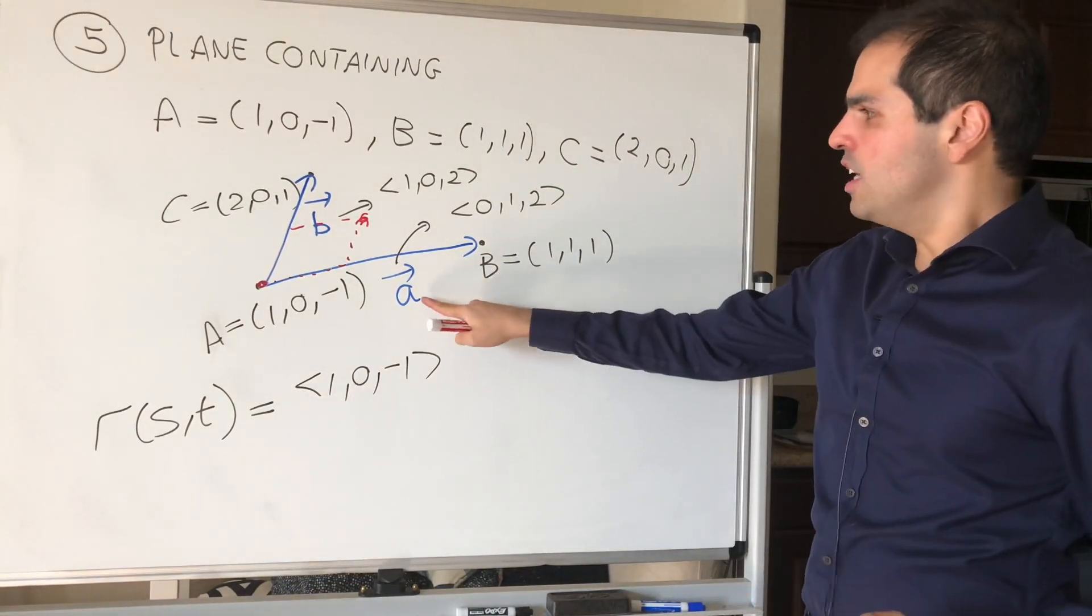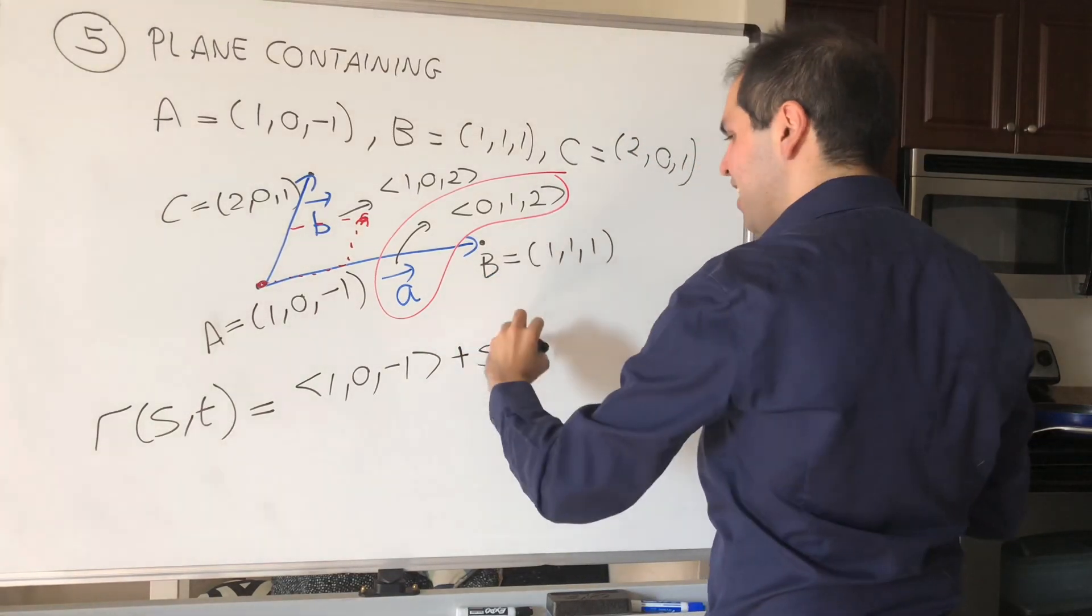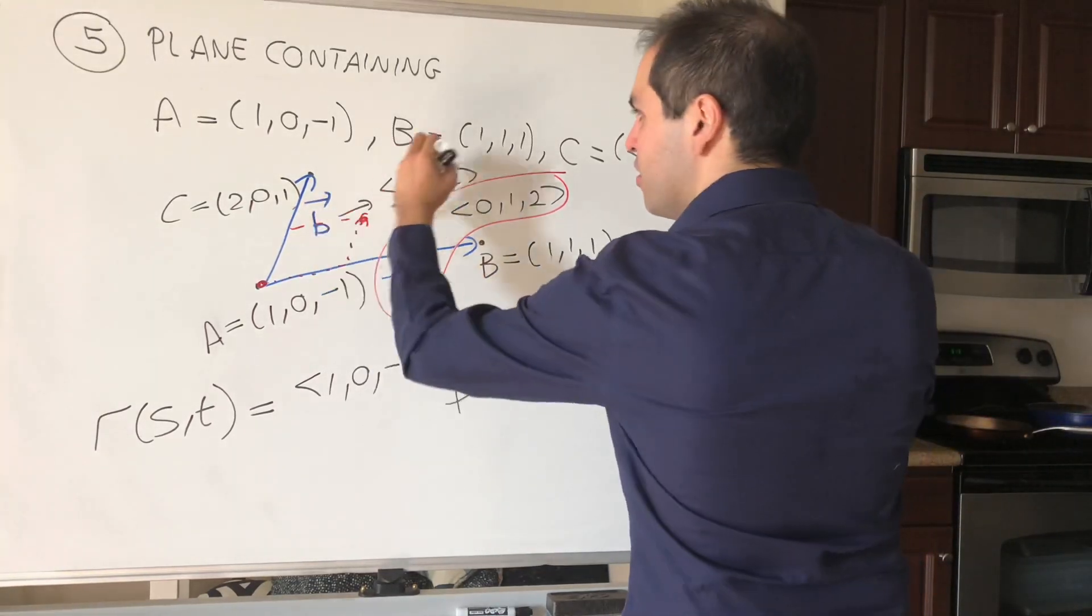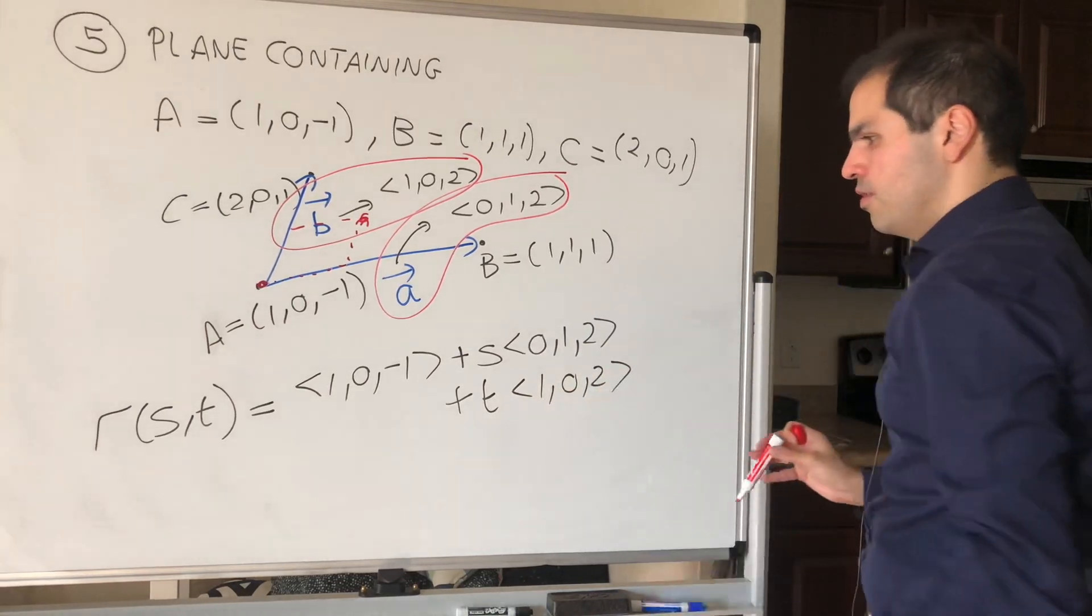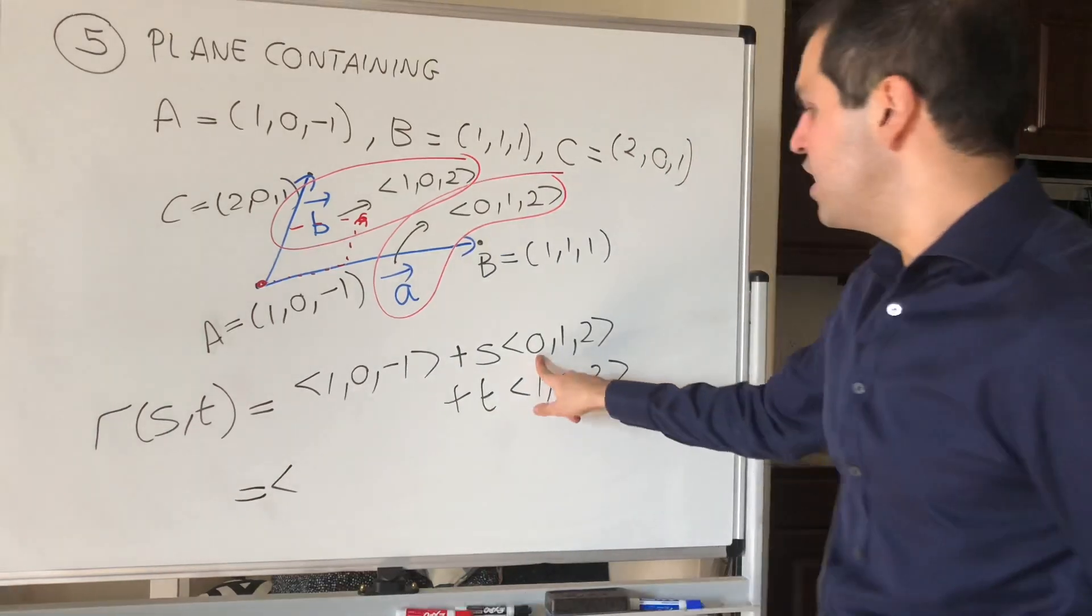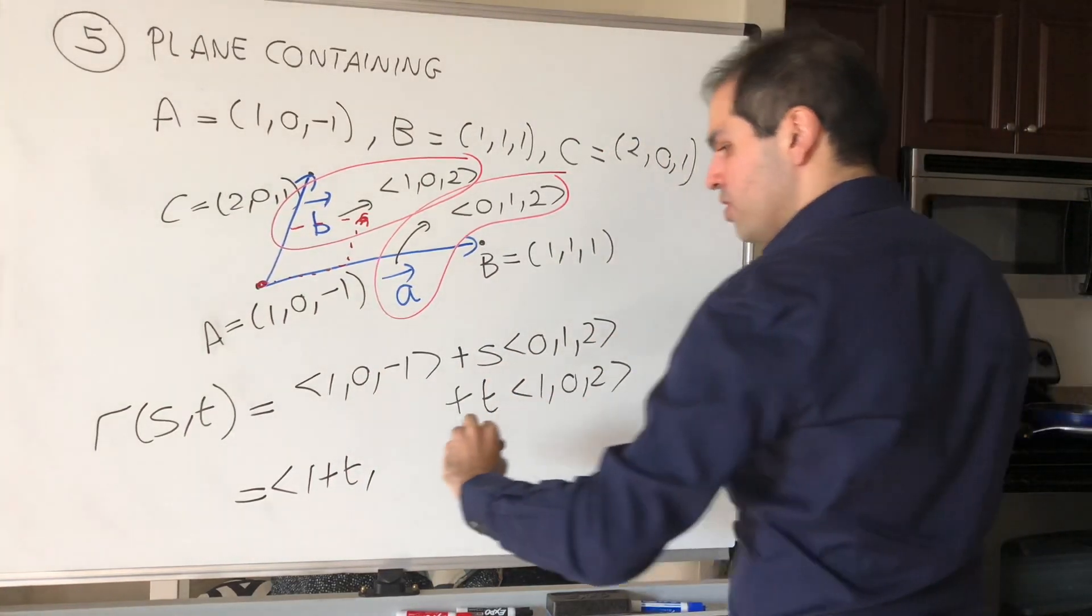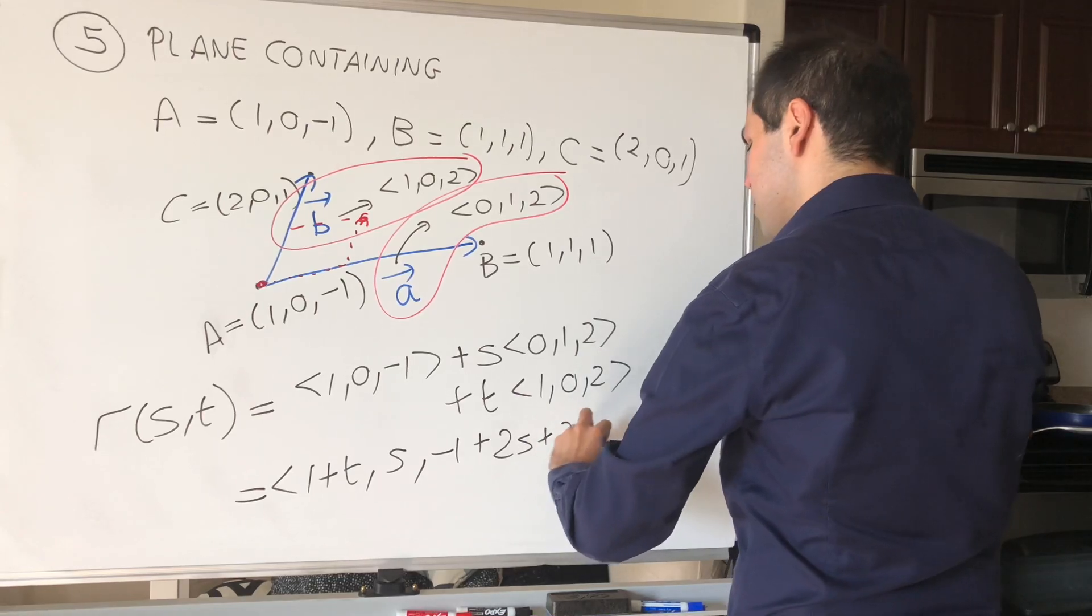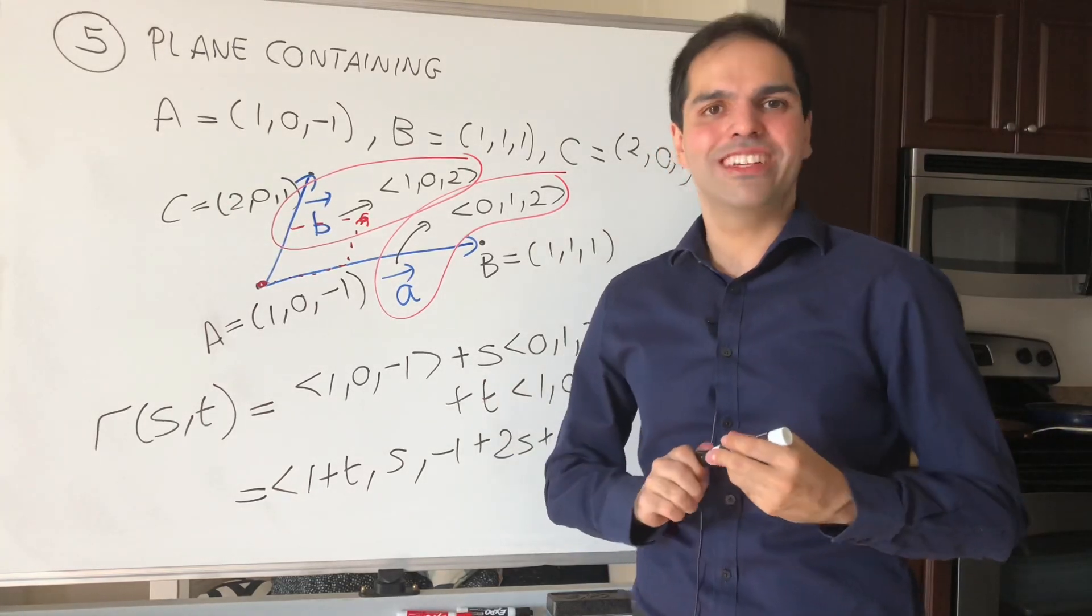Then you add any multiple of the vector a to this, so let's say plus s·a, so plus s times (0,1,2), and any multiple of the other vector b, so plus t·b, so t(1,0,2). And then you just add them up and you have a parametric party, so you get, again, 1 plus 0s plus t, so 1 plus t, 0 plus 1s plus 0t, so just s, and minus 1 plus 2s plus 2t. All right, and that's it. Here you have your parametric description of this plane, just like before you had parametric descriptions of lines.